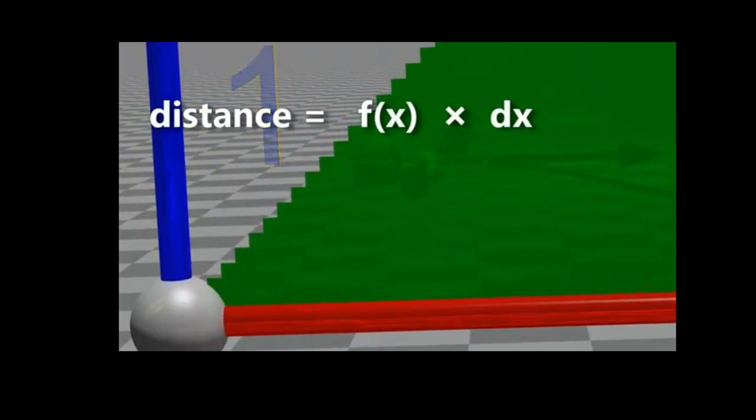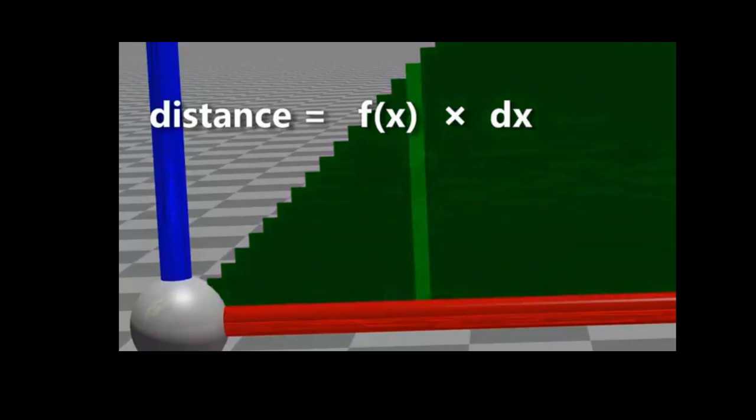Since dy divided by dx is called f of x, another way to write down the distance traveled during this moment of time is f of x multiplied by dx.